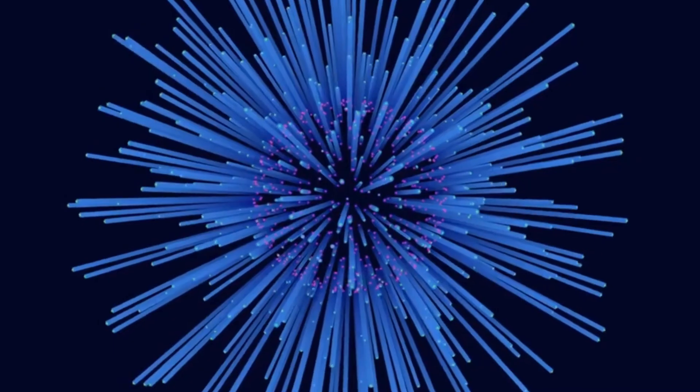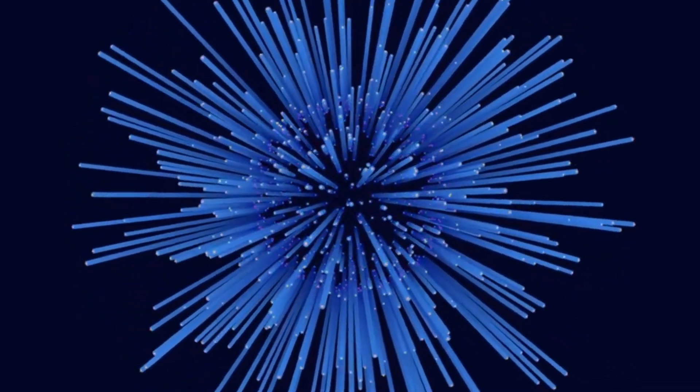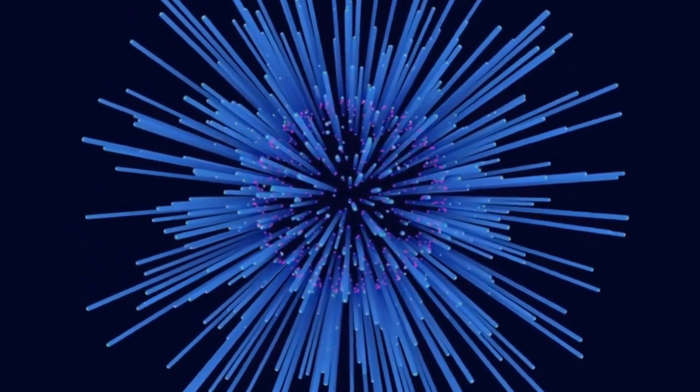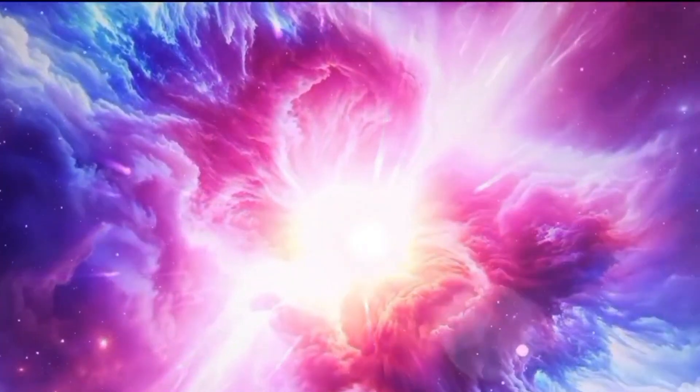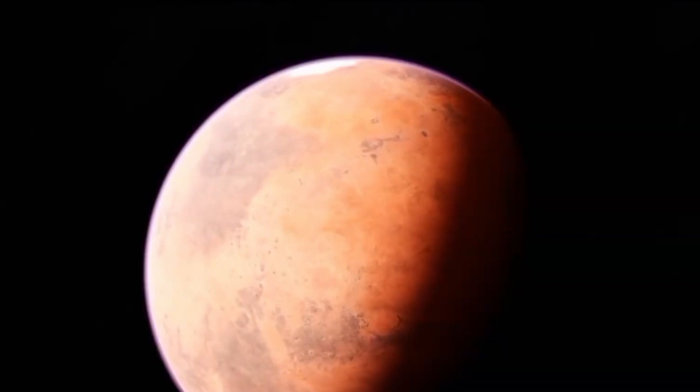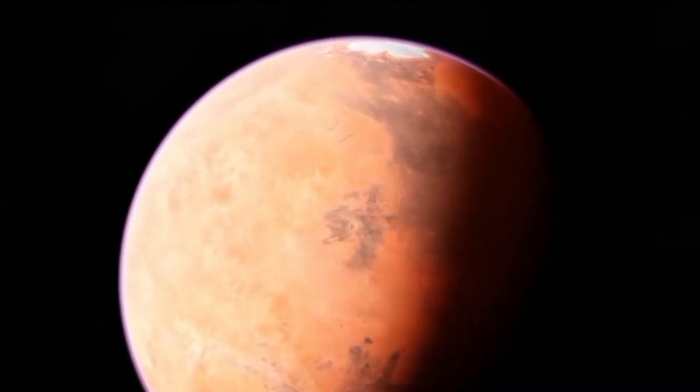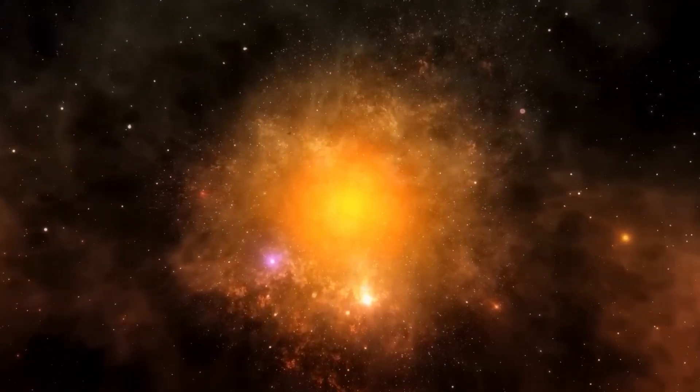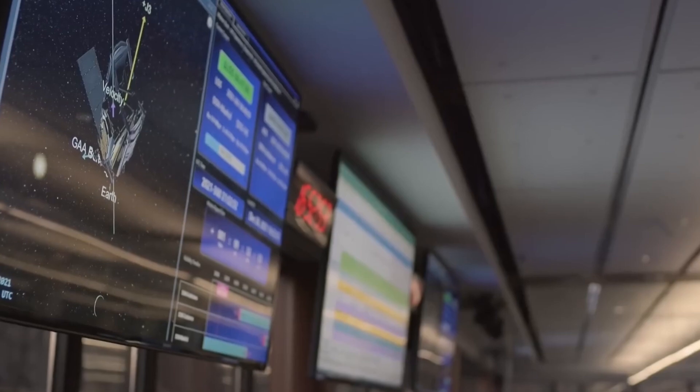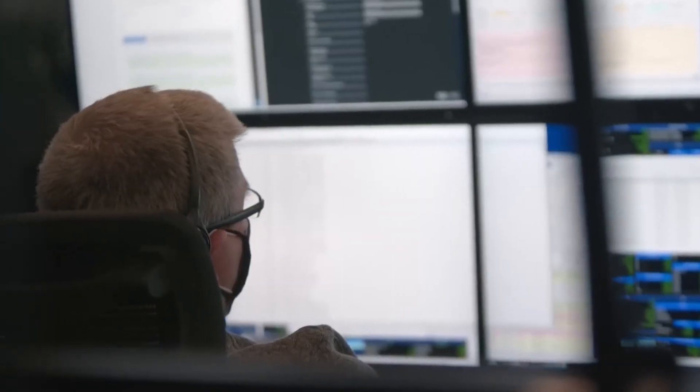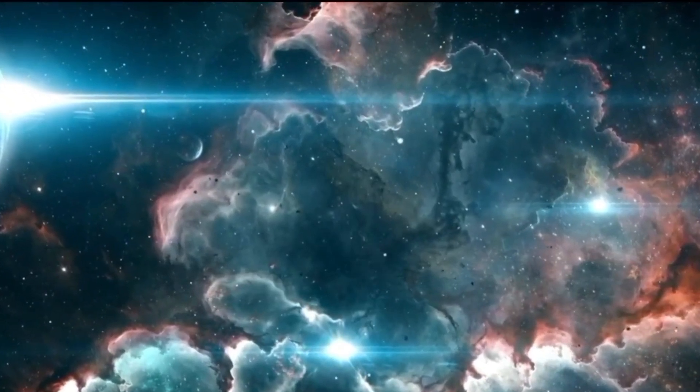For example, have you ever wondered about the colors of stars? Why are some stars blue, others yellow, and some, like Betelgeuse, a brilliant shade of red? The color of a star is directly related to its temperature. Blue stars are the hottest, with temperatures reaching up to 30,000 degrees Celsius, while red stars are cooler, with temperatures around 3,500 degrees Celsius. Betelgeuse, with its reddish hue, is a relatively cool star. But don't be fooled by the term cool, if you were to approach Betelgeuse, you'd be incinerated long before you got close.